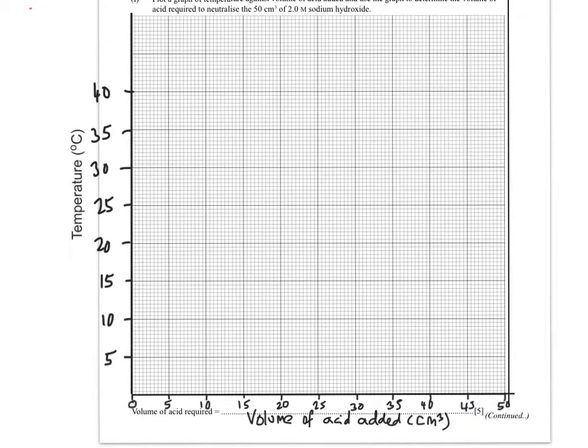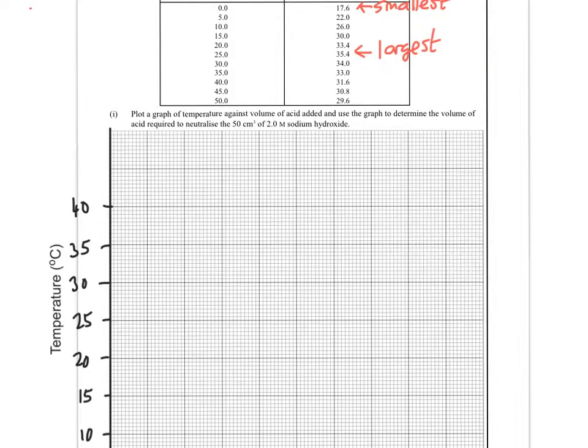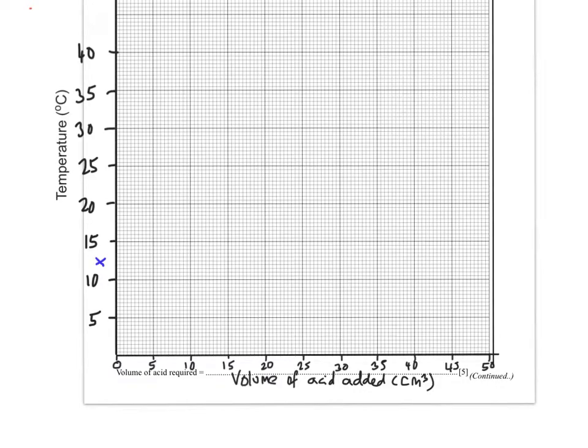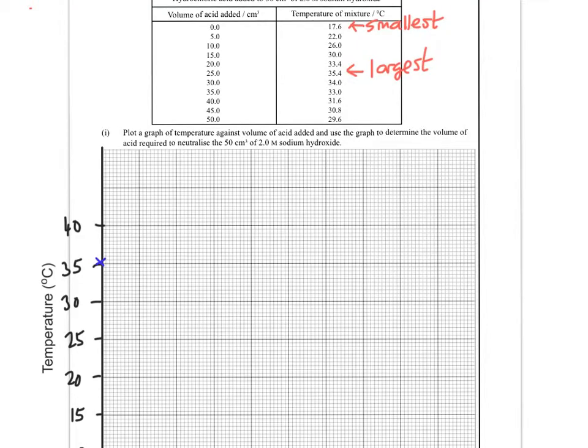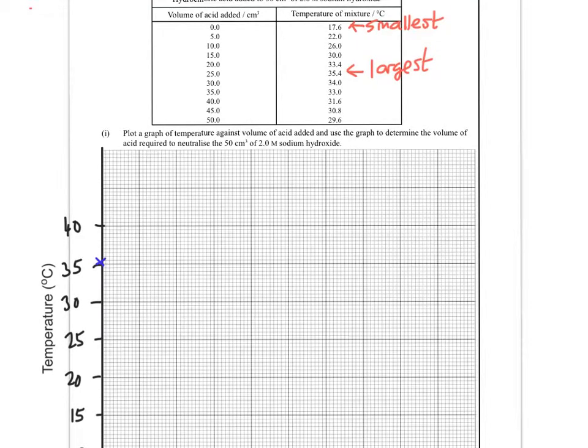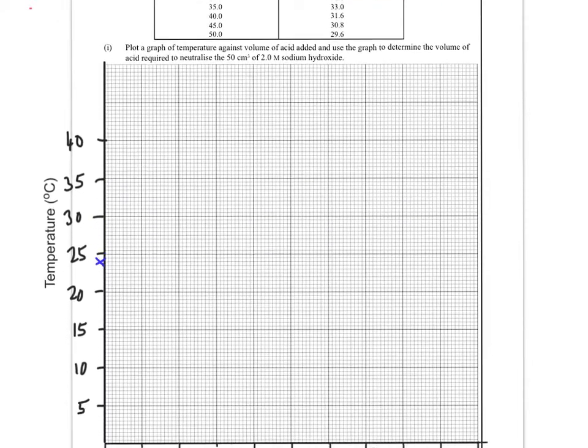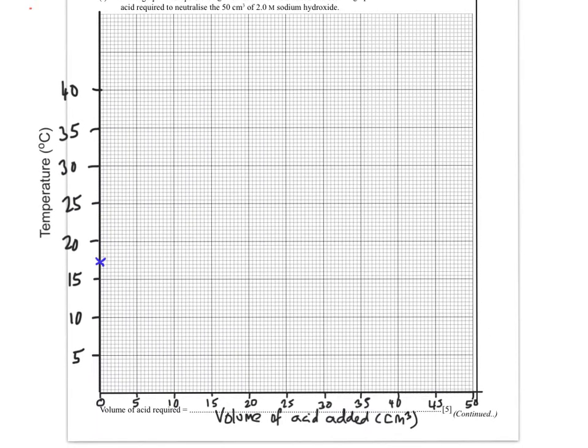Now I've scaled up my y-axis too, using a sensible scale to include my smallest of my range and my largest value in my range. Now let's start doing the points. My first point is at 0 cm³ and it's 17.6, which I've now done in blue. My next point is 5 cm³ against 22 degrees centigrade.